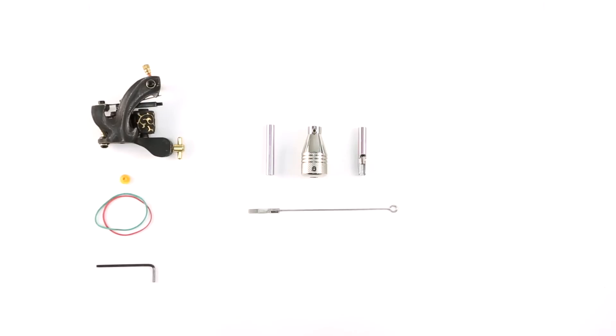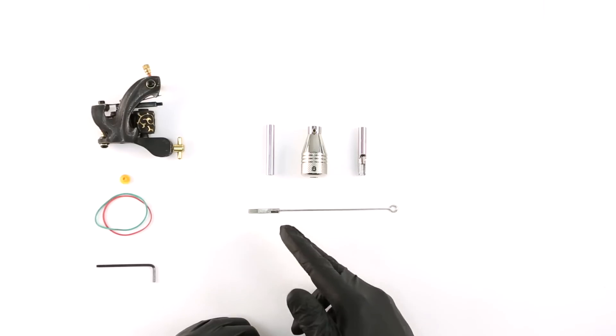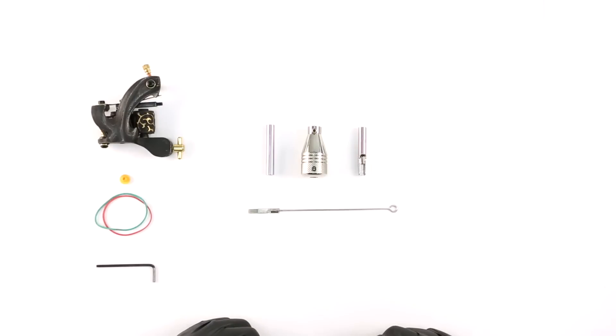This is a 13 mag which is a shading and coloring needle, but the setup would remain the same for a round or lining needle. These needles are pre-made, which means the group of needles at the end is already soldered to the needle bar. The loop at the other end of the bar is called an eye, which is what attaches the needle to the machine.